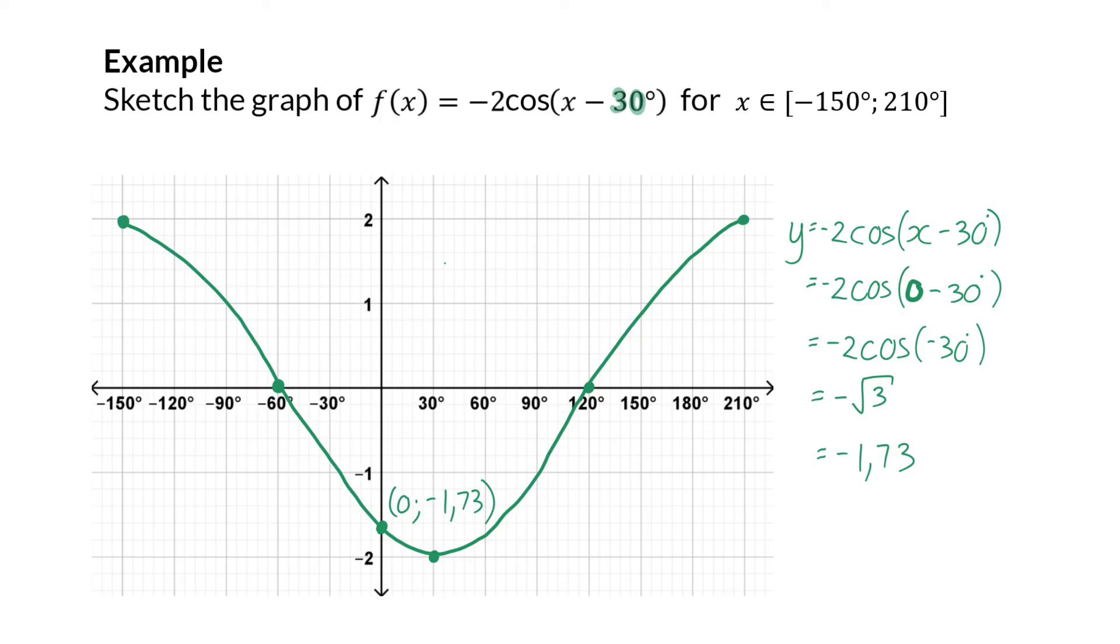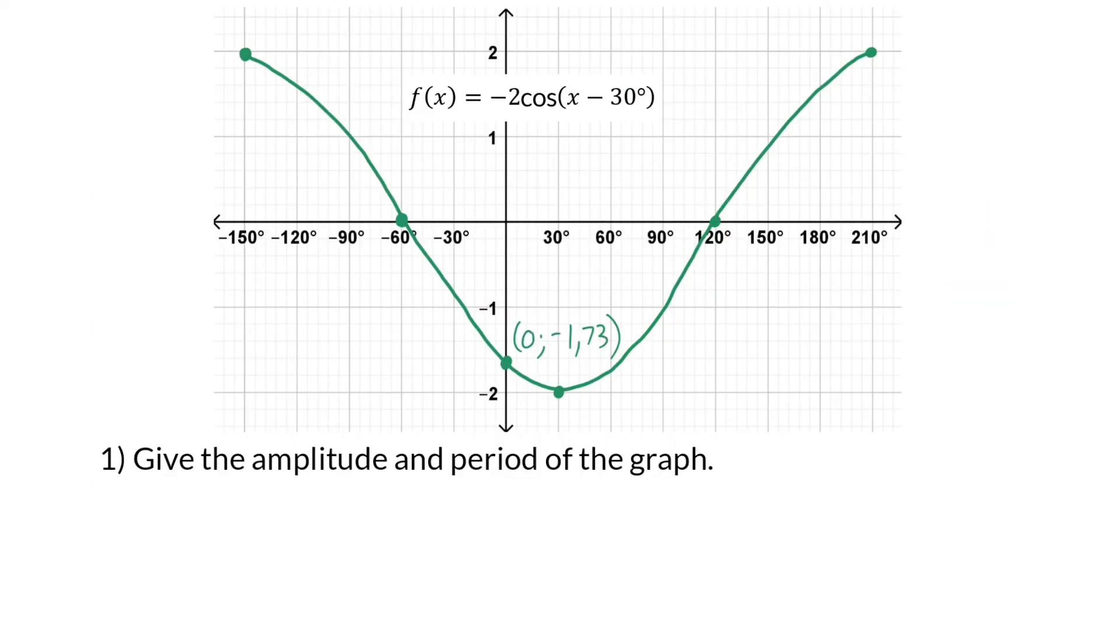This y-intercept then has to be indicated on the sketch as (0, -1.73). And here we have the complete graph for the specific interval. Next, a few interpretation questions can be asked. The first is: give the amplitude and period of the graph.